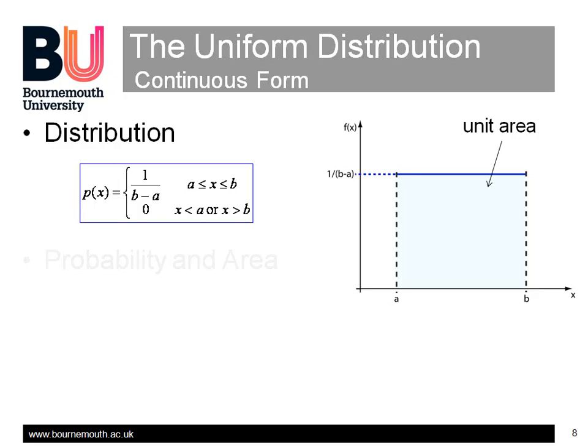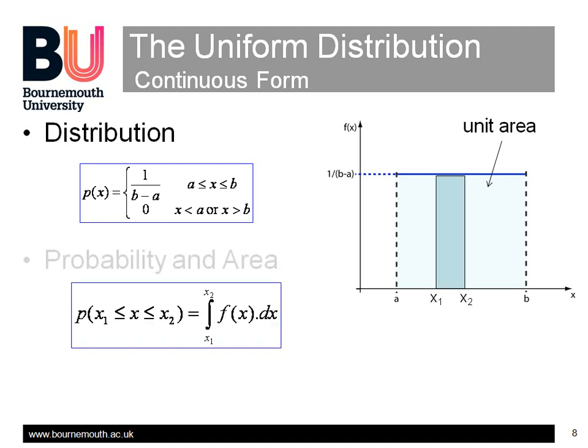In general, the continuous form of the uniform distribution has a probability of f equals 1 over b minus a for the given range b minus a, so the total area is unity. The probability of the variable having an outcome between any two values, x1 and x2, is the area under the distribution between those values.